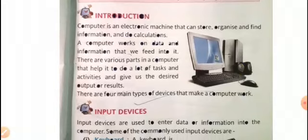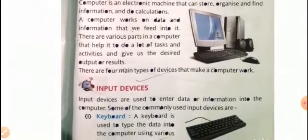It needs information that we feed into it. There are various parts in a computer that help it to do a task or an activity and give us the desired output. There are mainly four types of devices that make a computer work.